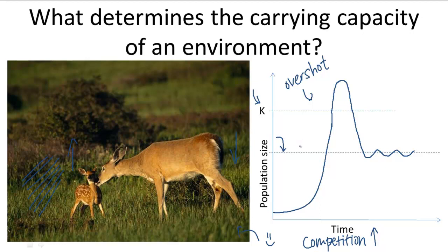Over time, the grass can rejuvenate and the carrying capacity will be restored. However, this does take a lot of time. And during that time, the deer population is best to stay down and fluctuate around this new carrying capacity. Otherwise, it risks the consequences of overshooting once again.